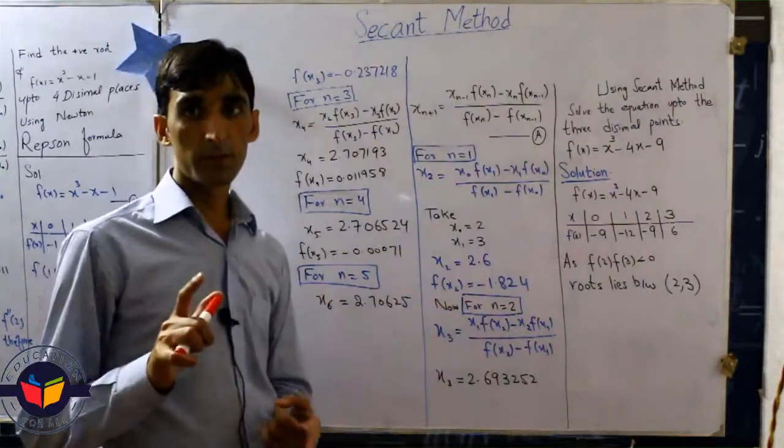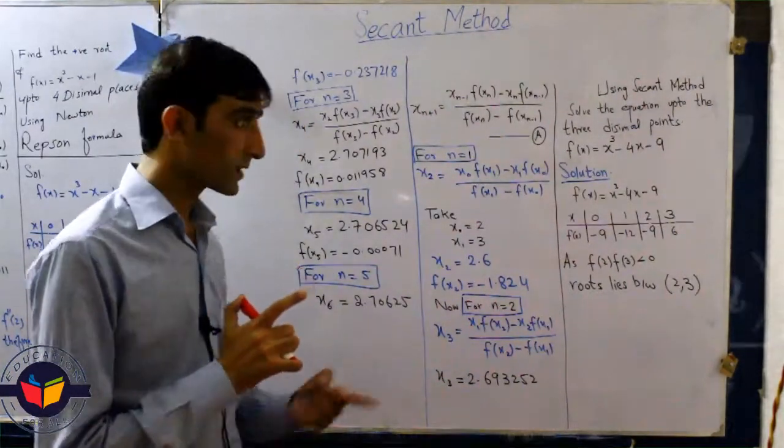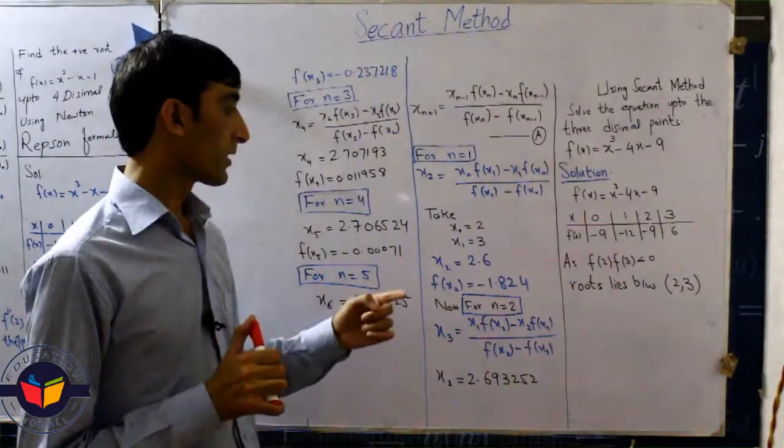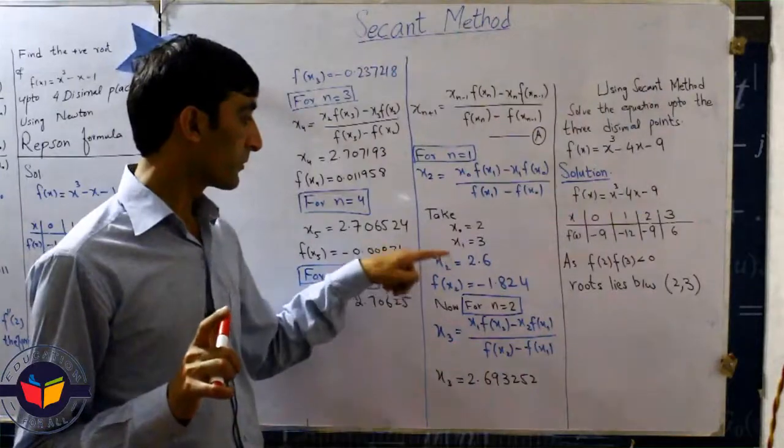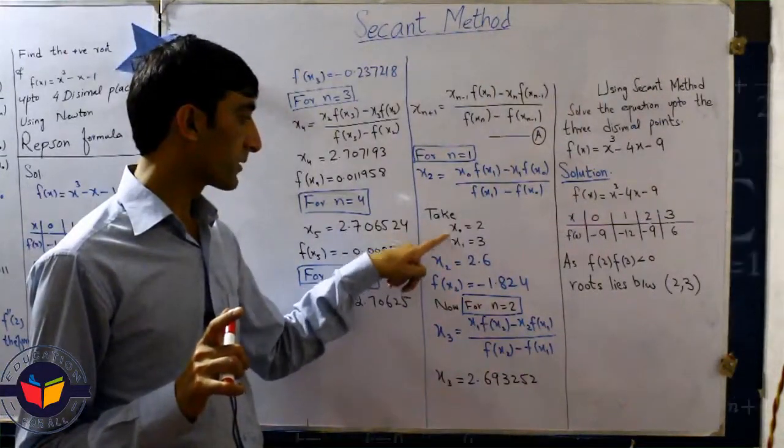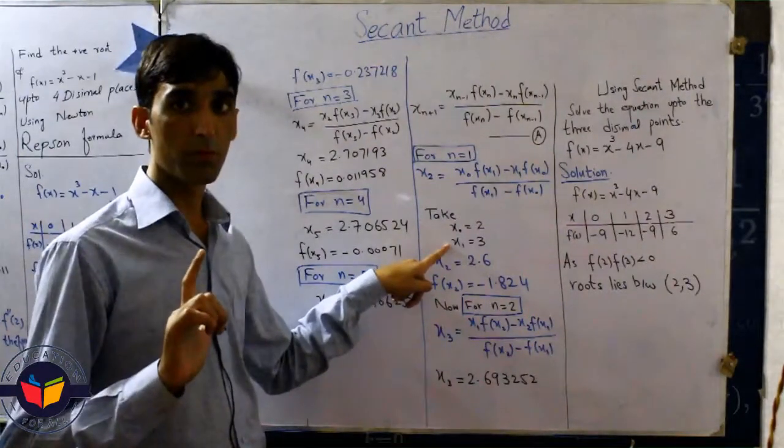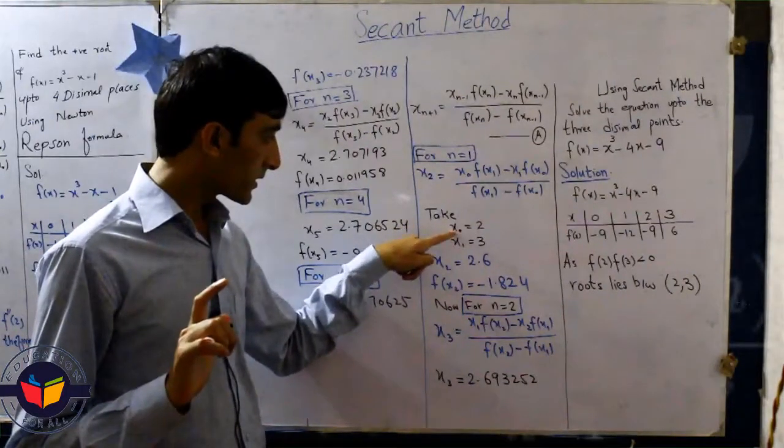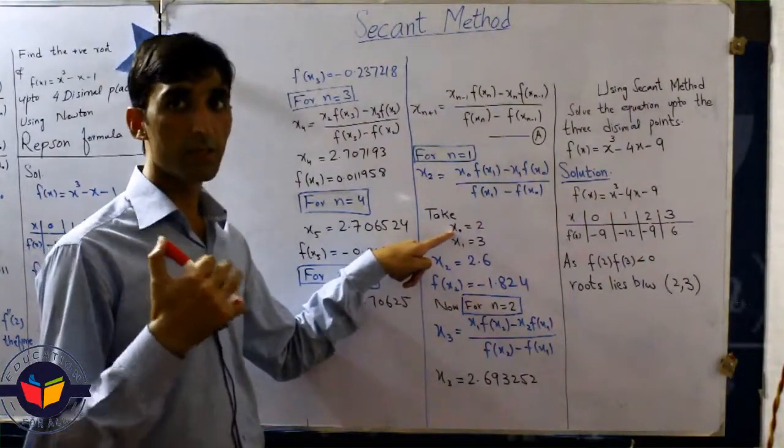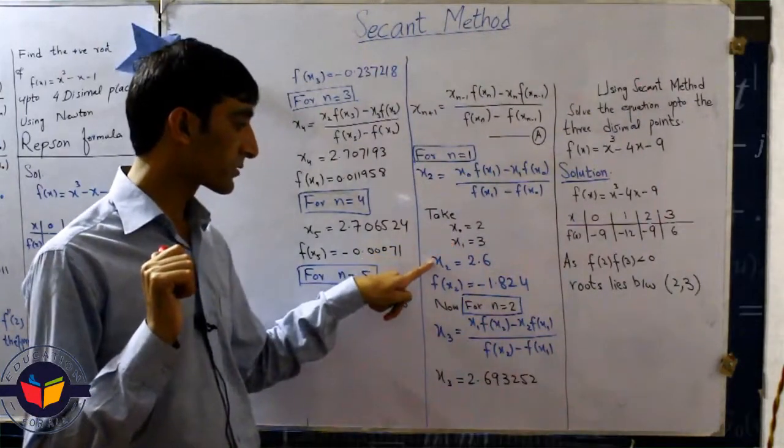What is different between the regular falsi position and the secant method? In regular position method we replace the value of x2 in one of them. But in this method we don't replace any value. We just ignore the first value, that means neglect x0, and we start calculation with x1 and x2.